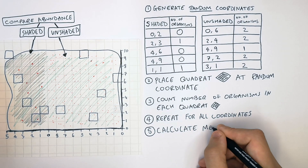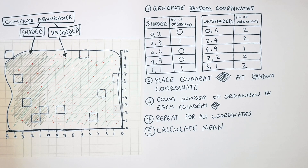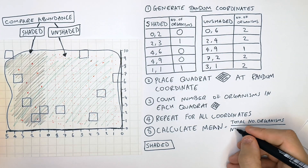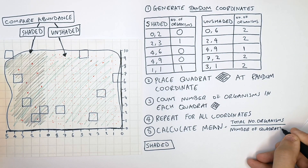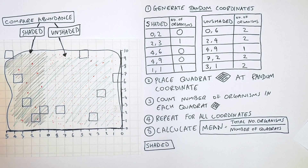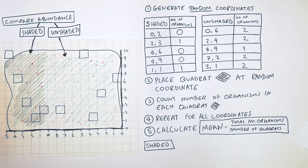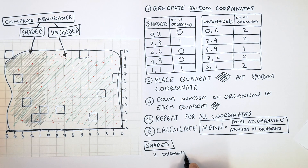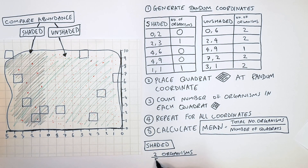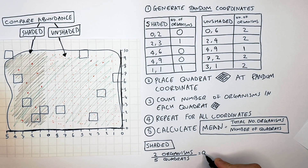Now we calculate the mean using our results: total number of organisms divided by the number of quadrats. In the shaded region we counted 2 organisms, divided by the total number of quadrats which was 5. So 2 divided by 5 gives us 0.4 plants per quadrat.